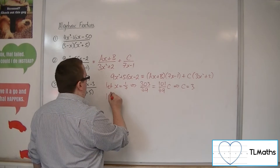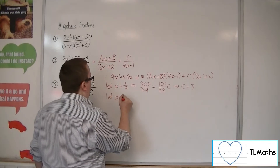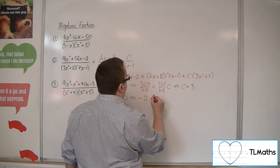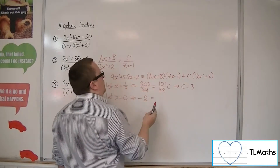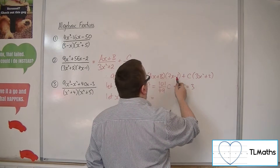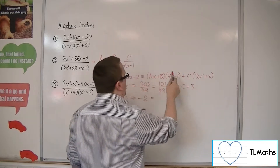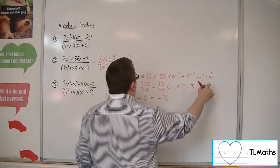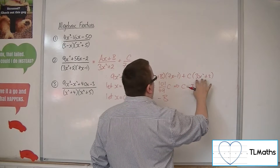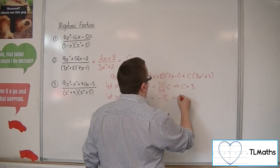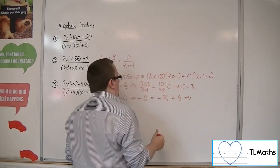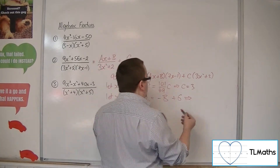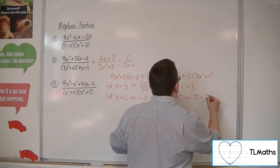Letting x equal 0: we get minus 2 on the left. On the right we get b times minus 1, so minus b, plus 2 lots of c, which is 6. So minus 2 minus 6 equals minus b, meaning minus 8 equals minus b, so b equals 8.